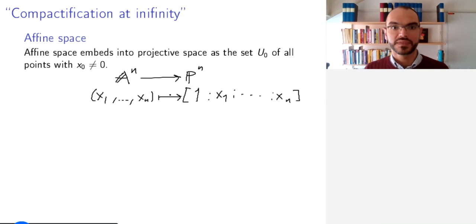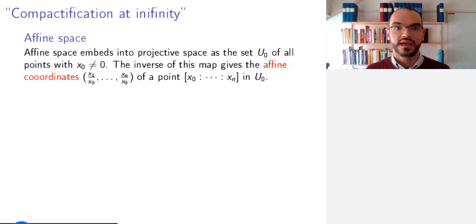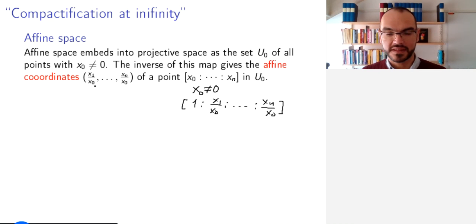From this one can see that this hits all points in P^n with the first coordinate non-zero. Remember that these coordinates are defined up to some global non-zero scalar factor. So if x_0 is different from 0, we can always rescale our representative so that it starts with 1. The image is U_0, and it is clear from construction that once we have fixed this there is no other identification to be made, so this is an injective map. The inverse of this map gives the affine coordinates of a point in U_0.